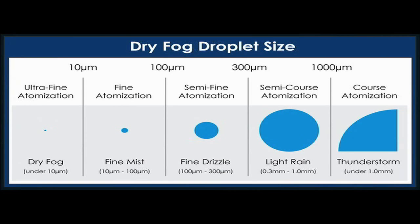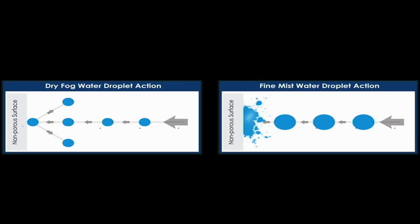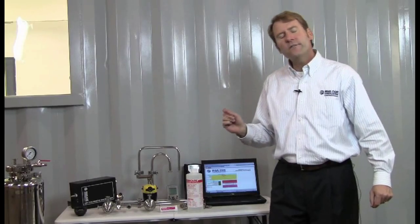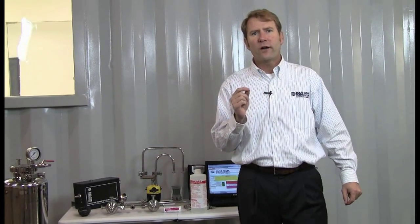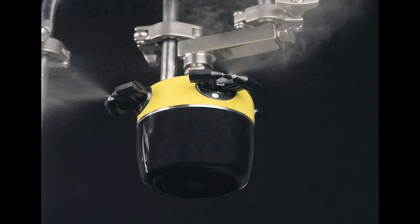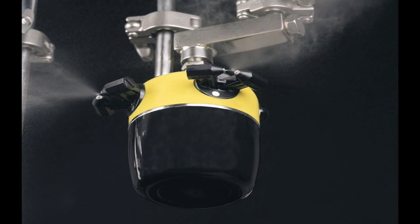The Markor Dry Fog System puts out a 7.5 micron droplet. That droplet is so small it does not wet down surfaces. It bounces off, it evaporates, and it does a vapor phase disinfection, leaving behind no residuals on any surfaces at all. You control the relative humidity in the clean room to ensure that the dry fog has gone everywhere, ensuring complete and total disinfection.